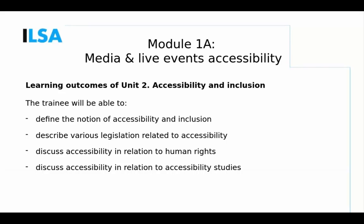Moving to Unit 2, called Accessibility and Inclusion, it is important that students are able to define what accessibility and inclusion are. We will introduce them to the general idea of universal design and design for all, which underlie the concept of inclusion. Students should also be able to describe various types of legislation — international, European, national, and regional — on inclusion and accessibility and how it can be applied to media and live events. Specific examples include the European Accessibility Act and the United Nations Convention on the Rights of Persons with Disabilities.